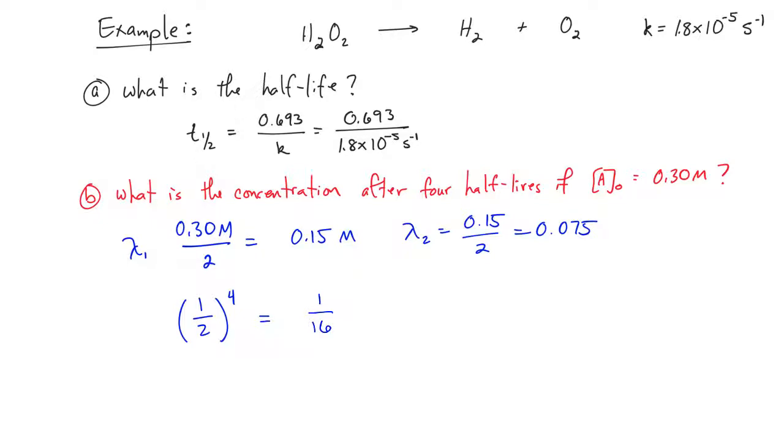Which means that if we just take our 0.30 molar and divide by 16, we're going to get a concentration of 0.019 molar after four half-lives have passed.